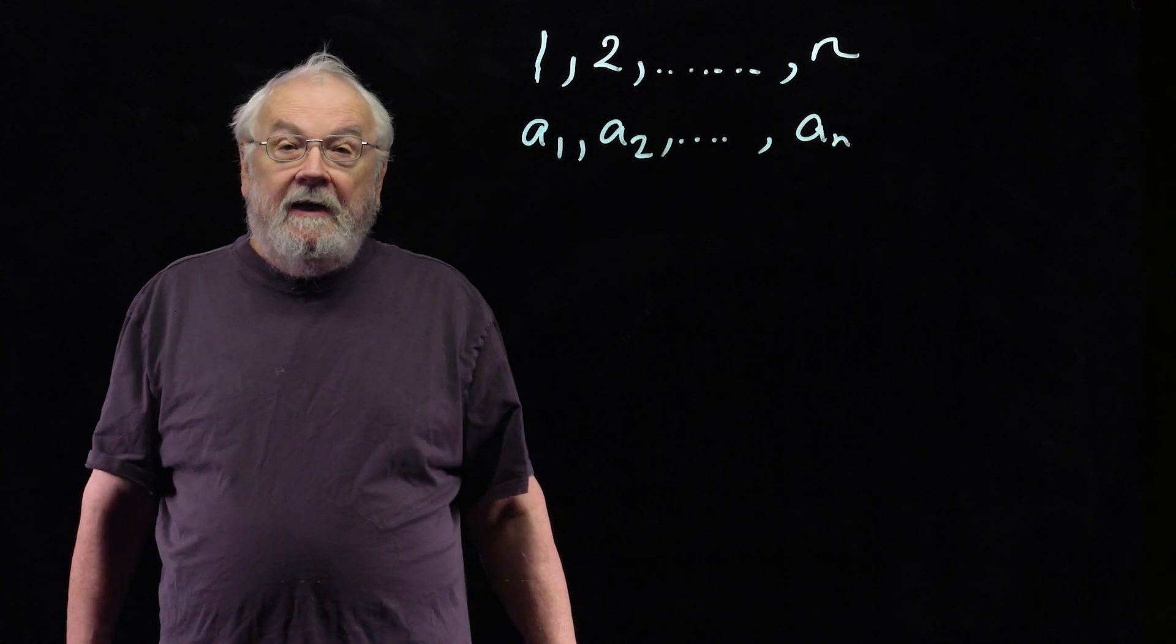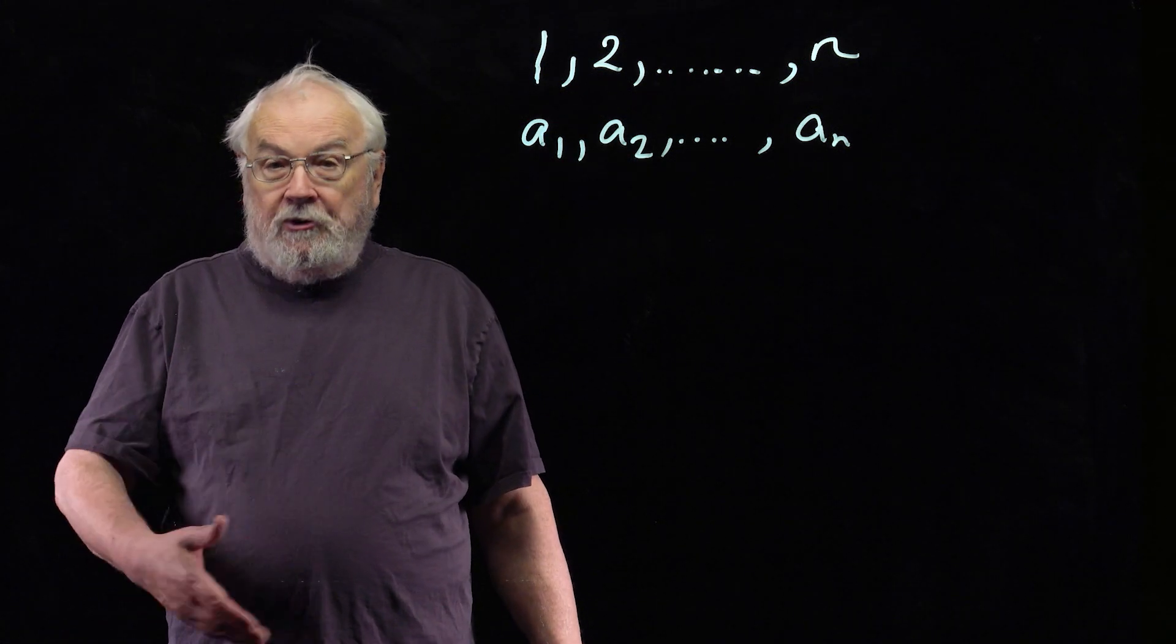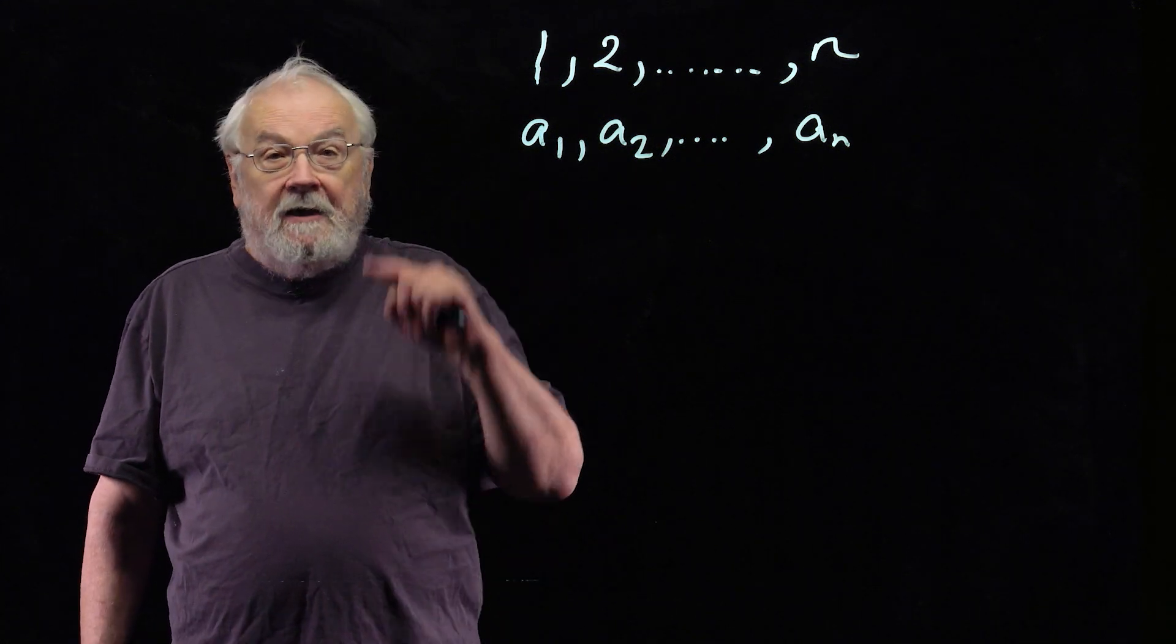The way the trick works is that somebody thinks of a number, they're told to change its sign, multiply it by minus 1, and then add the next card.